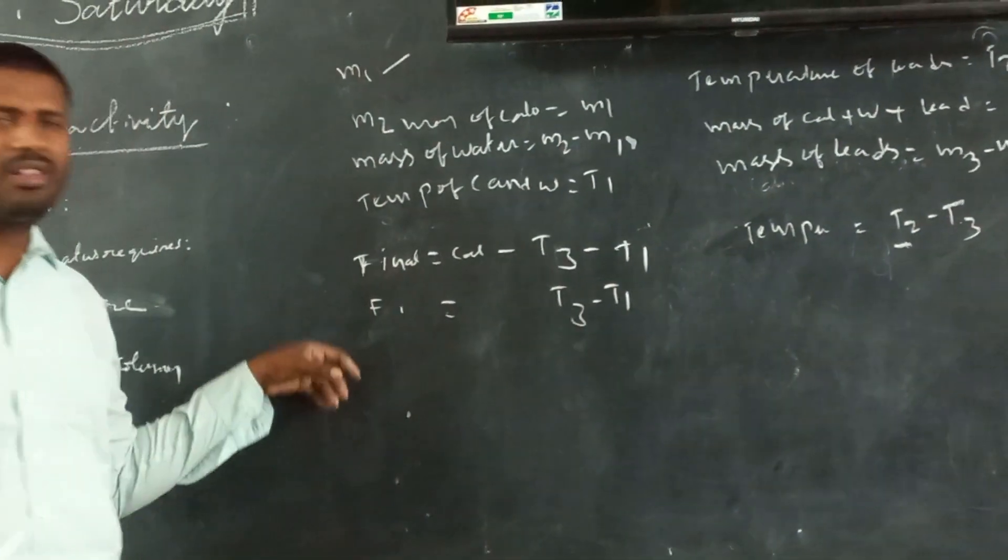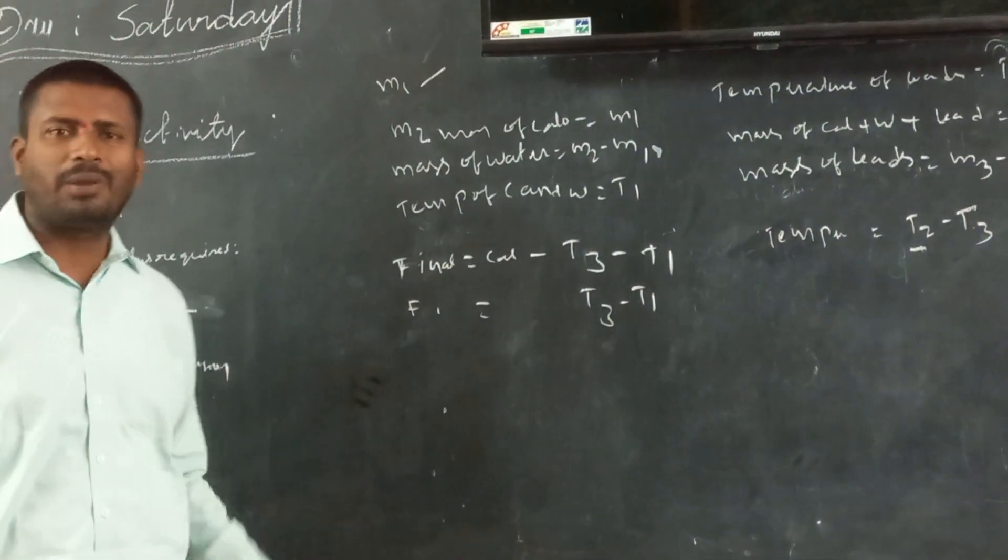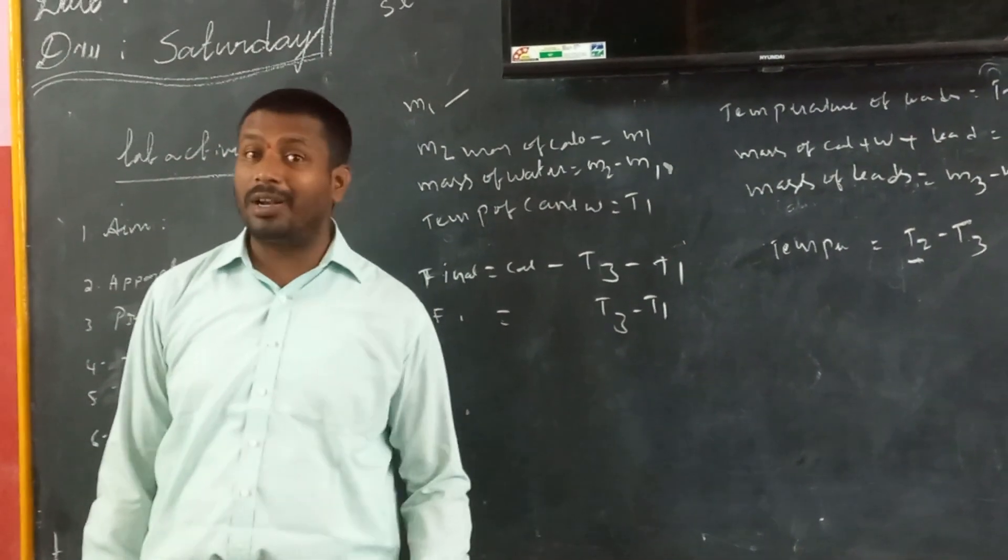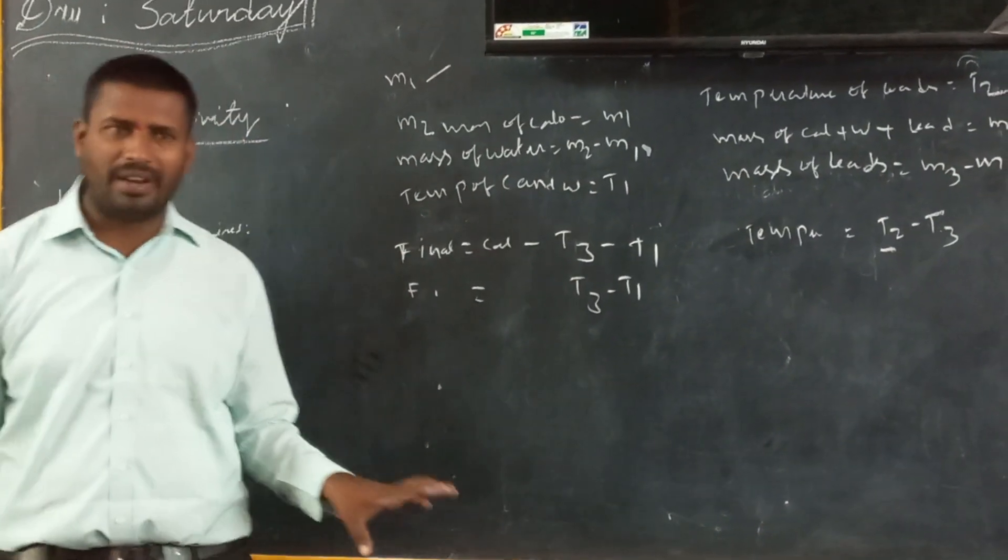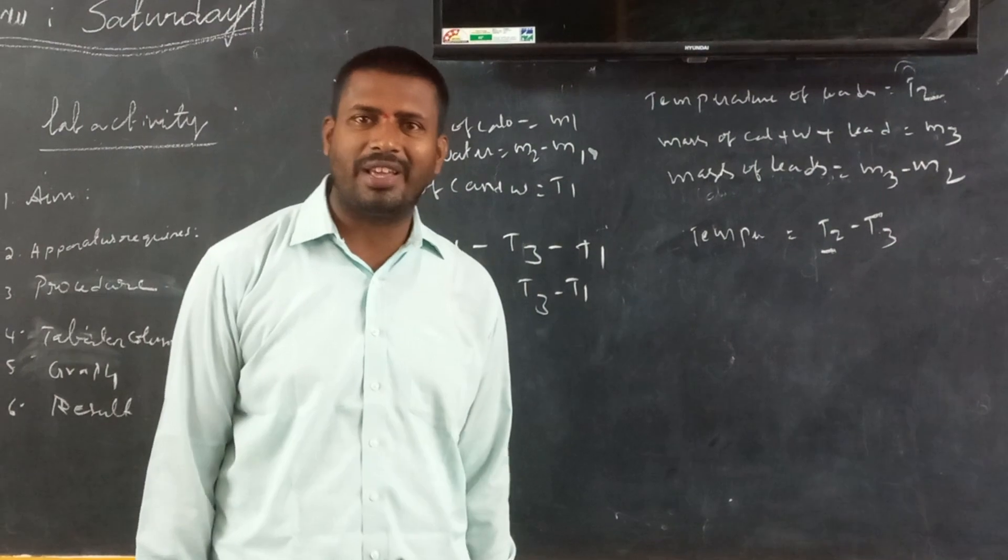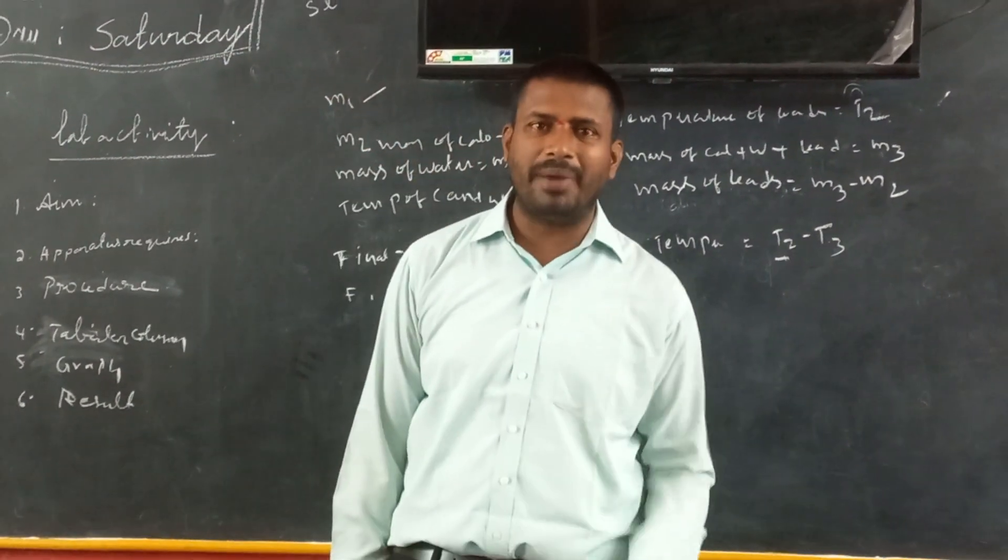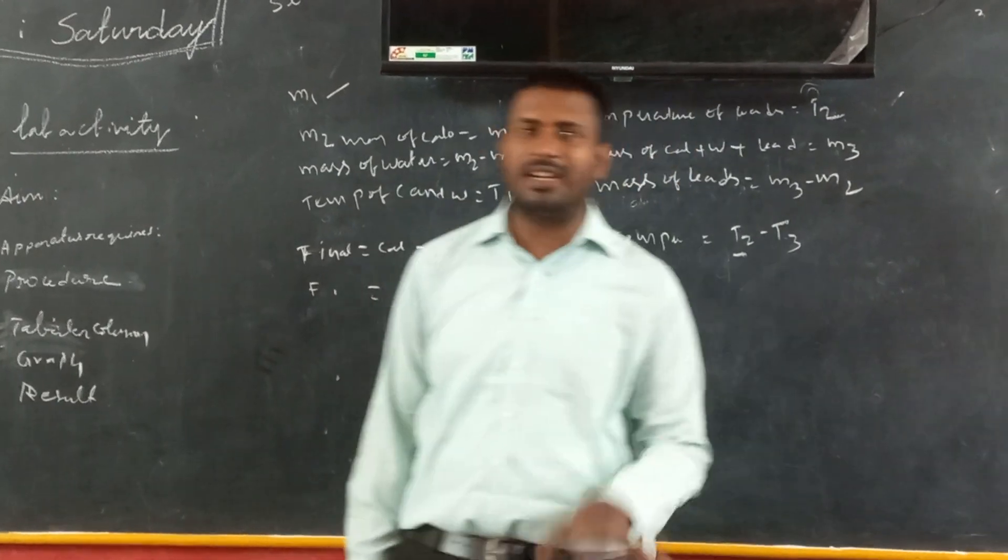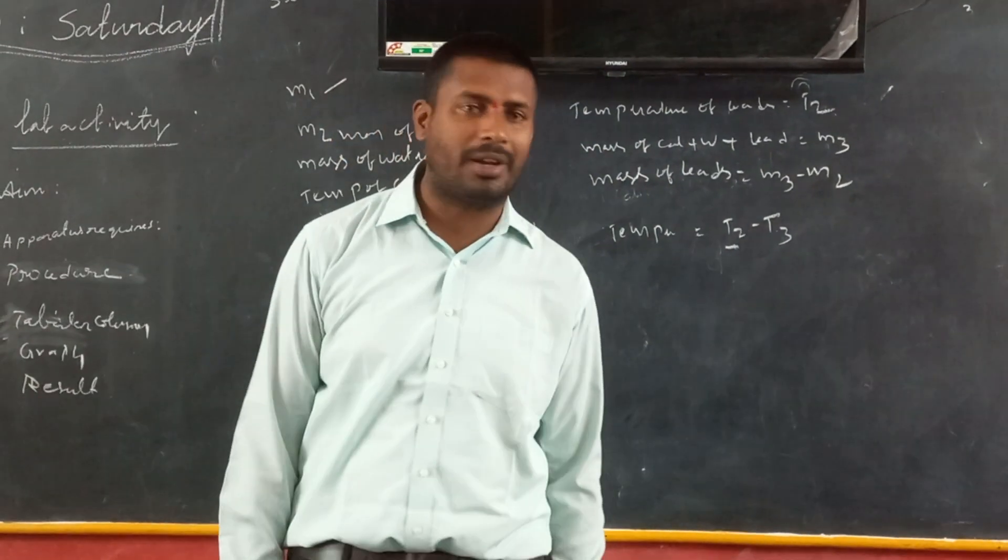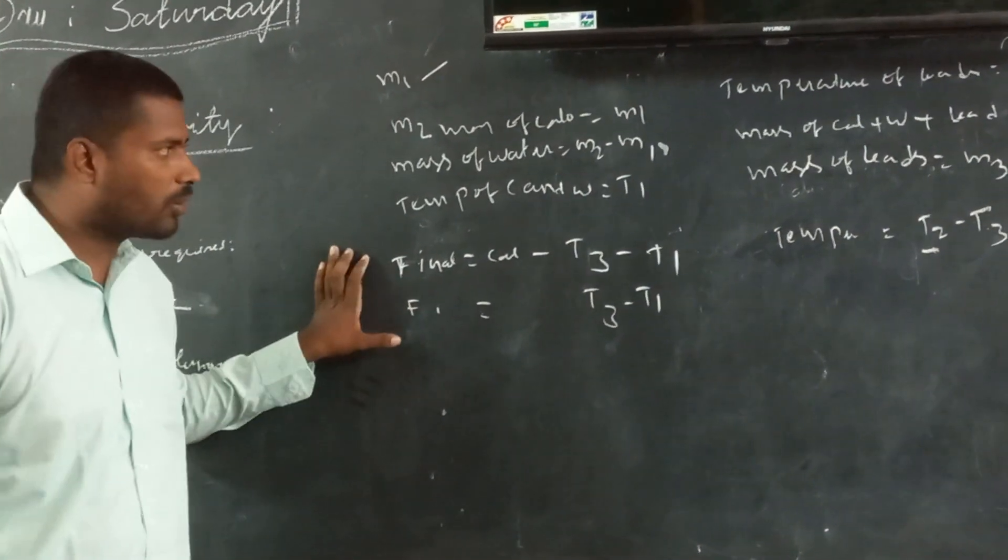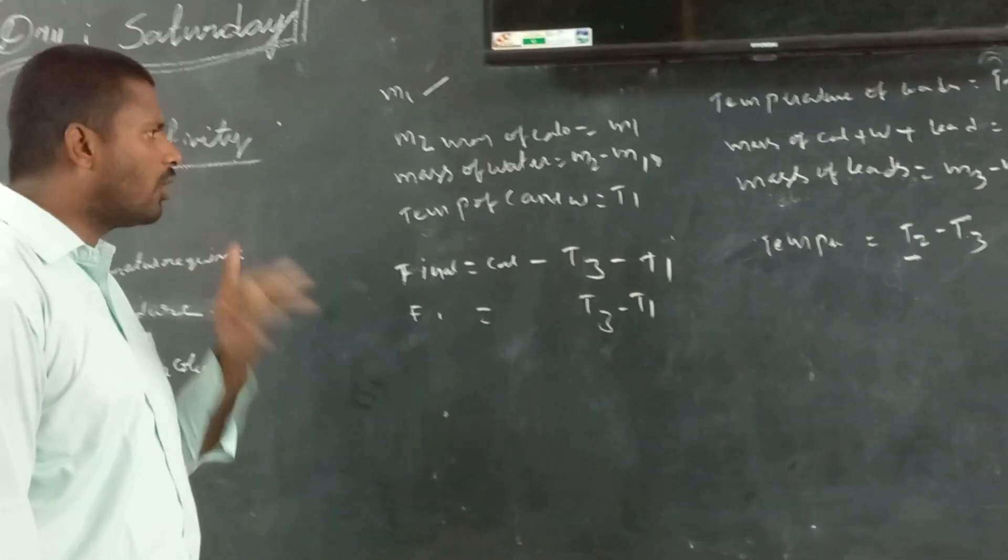And now, my dear students, let me tell you, calorimeter is a device which is used to measure the heat. And, calorimeter principle is: no heat lost up, no heat gain. Yet, heat lost by a hot body is equal to heat gain by a cold body. This is one of the important principle that was maintained by calorimeter. Now, we will find out the specific heat of a solid.